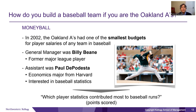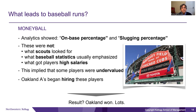To everybody's surprise, Billy Bean never really amounted to very much. He bounced from team to team and eventually ended up at the Oakland A's. He then moved from being a player to becoming a scout, and worked himself up to being general manager. Because he was frustrated by his inability to recruit the best players, he hired an assistant called Paul de Podesta — an economics major from Harvard interested in baseball statistics. Given that they had so little money, they asked: which player statistics contribute most to baseball runs — the points scored?